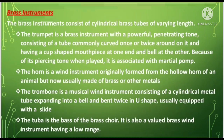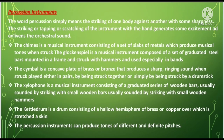Brass instruments consist of cylindrical brass tubes of varying length. Examples include the trumpet, the horn, the trombone, and the tuba — these are loud and can be heard from a great distance. In percussion instruments, the word percussion simply means the striking of one body against another with some sharpness. The striking, tapping, or scratching of the instrument with the hand generates excitement and enlivens the orchestral sound. Examples include the chimes, the cymbal, the xylophone, the kettle drum, and the percussion drum used during drum and lyre competitions.